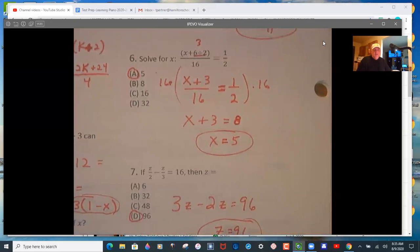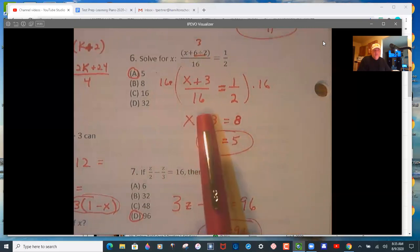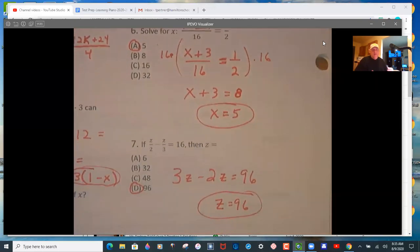Problem 6, multiply to eliminate denominators and then do this division here. And so 16 on both sides. Then it boils down to something simple after you do that. So lots of multiplying to eliminate fractions. It happens again on number 7. Multiply everything by 6. So 3z minus 2z equals 96.